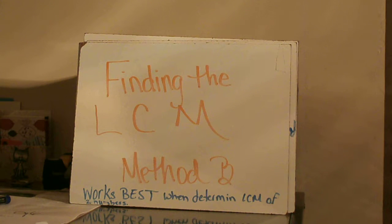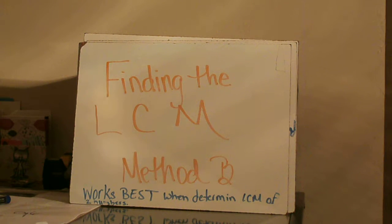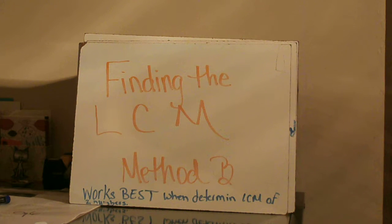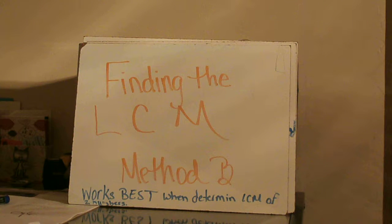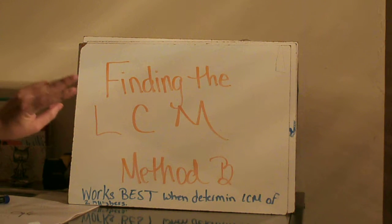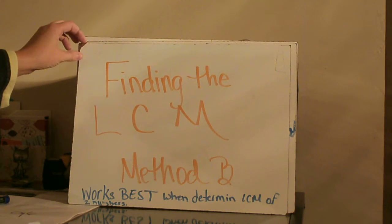This video is on finding the least common multiple, Method B. In class we have looked at three methods. Method A was listing the multiples. Method B works best when determining the LCM of just two numbers. If you have more than two numbers, it gets a little more complicated to use Method B. But if you're working with just two composite numbers, this method works really well.